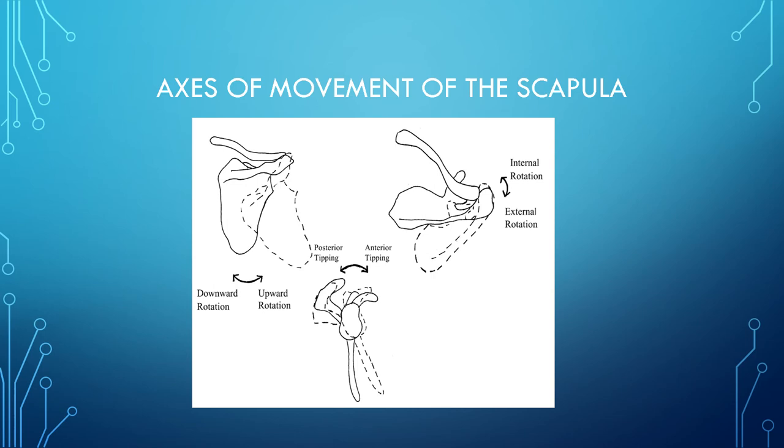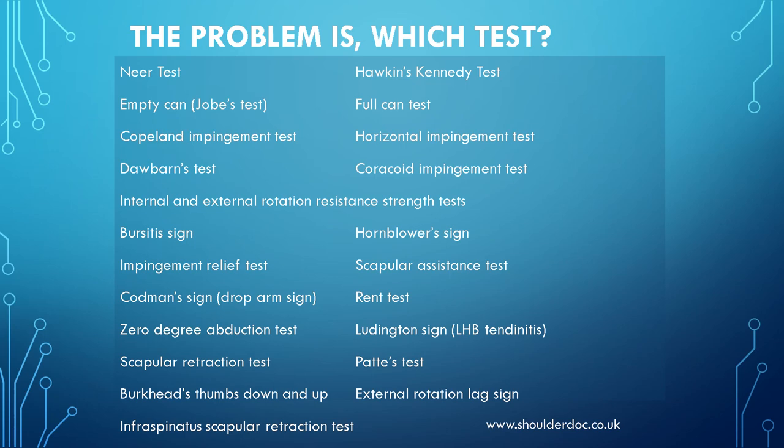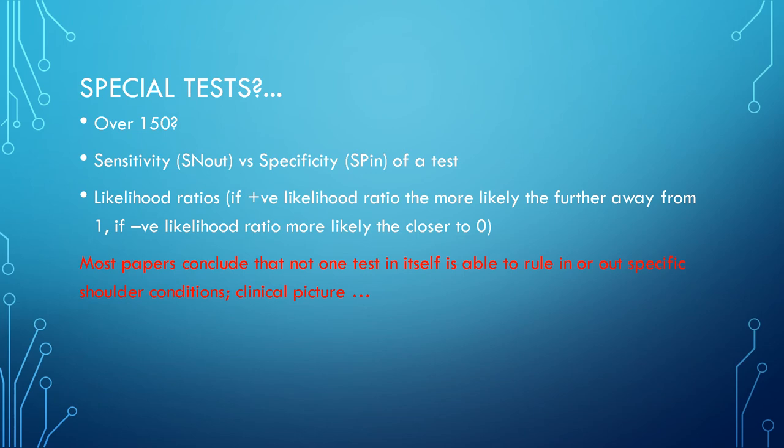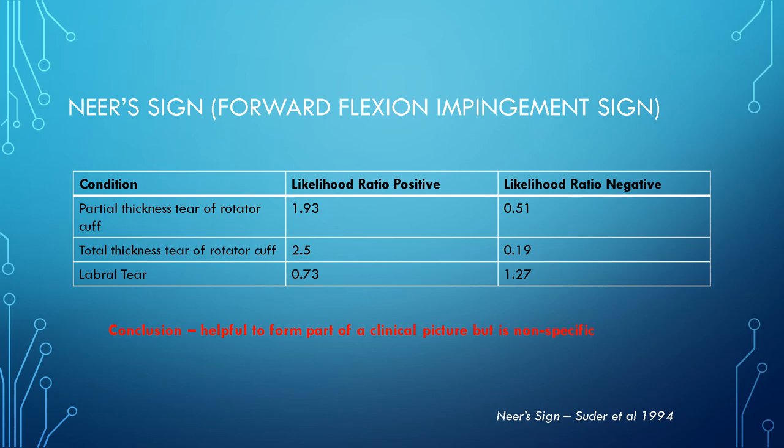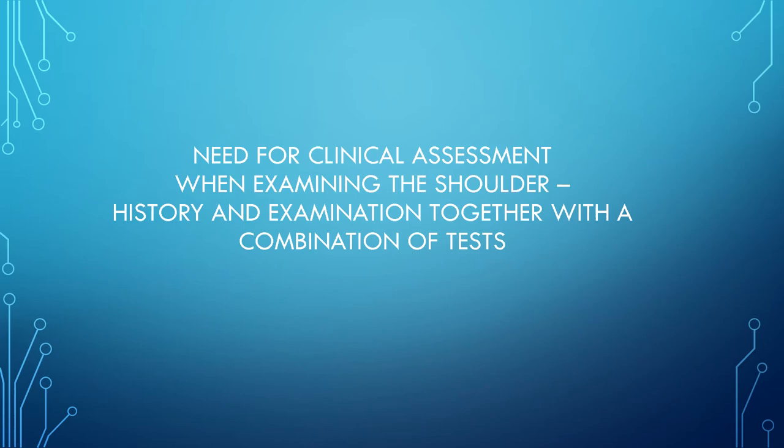The challenge in testing the rotator cuff is choosing the right specialist tests. For example, considering the Neer sign and the Hawkins-Kennedy test are important components of the shoulder examination.